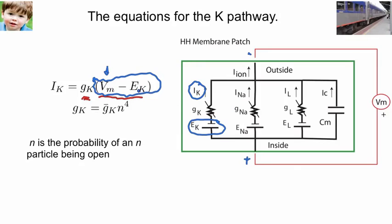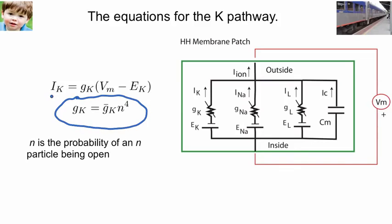Now, there are some things that are worth thinking about there. First of all, GK seems to be a variable rather than a constant. We have an equation here. Let's talk about that equation. That equation says the value of GK at any particular moment, that value, is equal to the maximum value of GK.